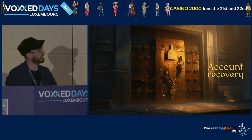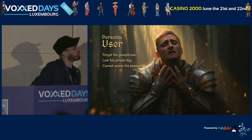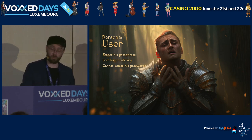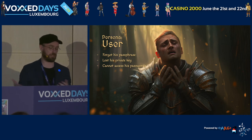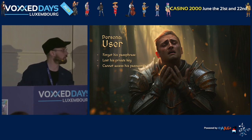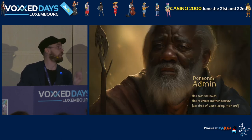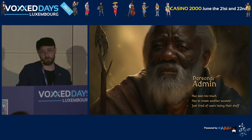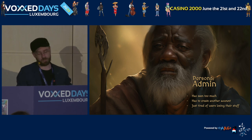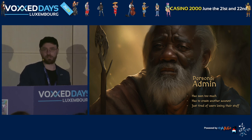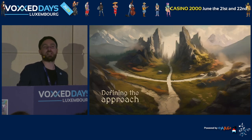The next step in the map is identifying the characters in the story. The user is quite an important one — they cannot access their account because they lost their passphrase or private key, and they are quite desperate. But there's another character who is also extremely important: the admin. They've seen this happen many times, and they're stuck because the only thing they can do is create another account for the user. The pain is shared on both sides.